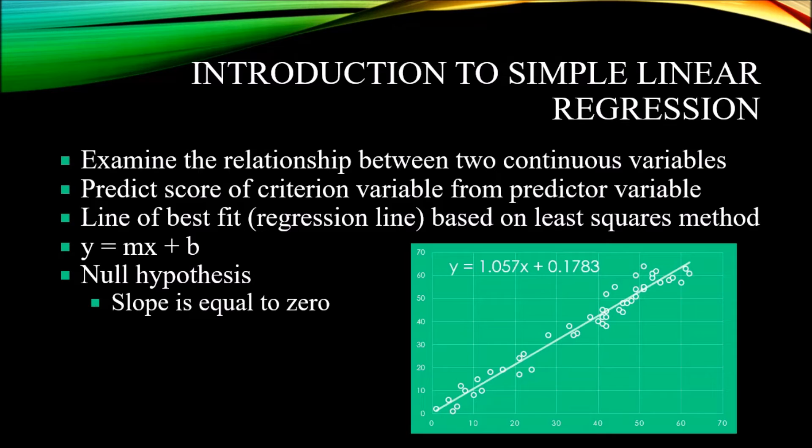The least squares method plots a line so that the sum of the squares of those residuals, the sum of the squared residuals, is going to be minimized. This regression line, based on the least squares method, can be summed up with this equation,